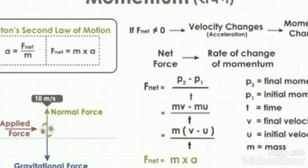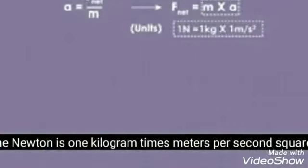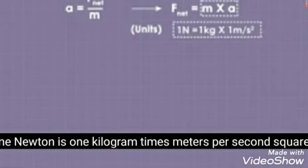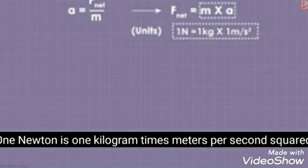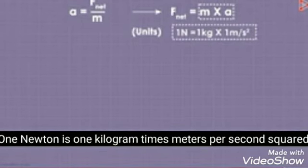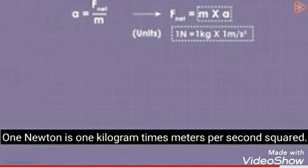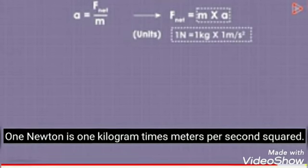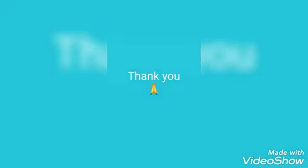F net is equal to mass into acceleration. We can define one newton using this. In this module, we learned Newton's Second Law and derived it from Newton's First Law of Motion. Thank you, students.